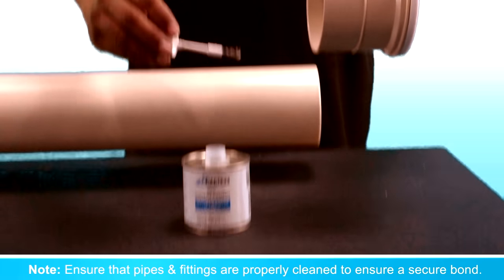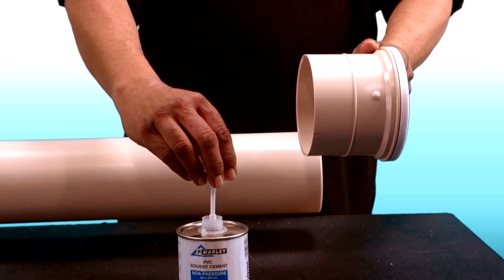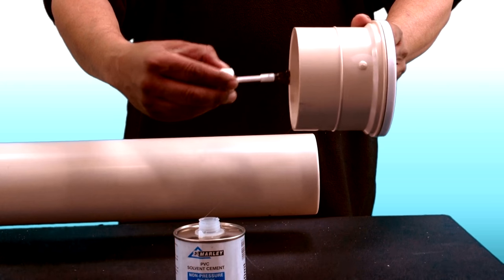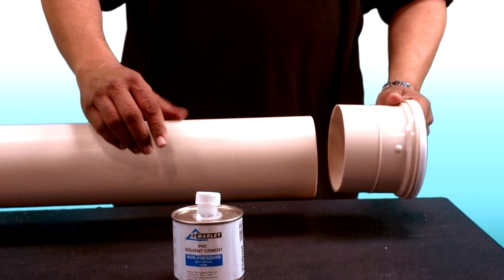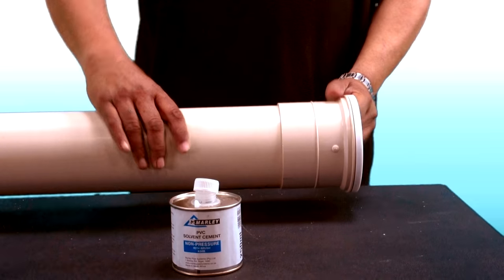Coat the outside of the pipe end up to the insertion depth, as well as the inside of the fittings with solvent weld and join together immediately by pushing the pipe firmly into the fitting up to the insertion depth. Remove any surplus solvent weld immediately with a clean, dry cloth.